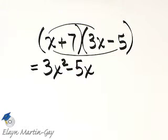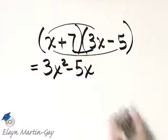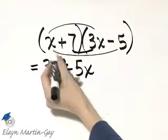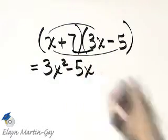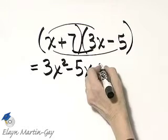The product of the inside or inner terms. That's F, first times first; O, outside terms; I, inside terms. That's 21x.